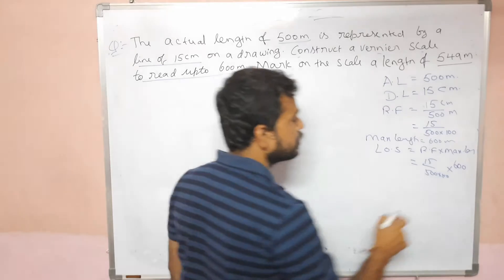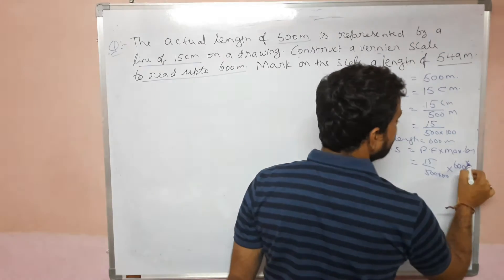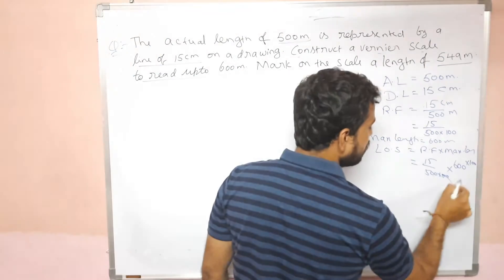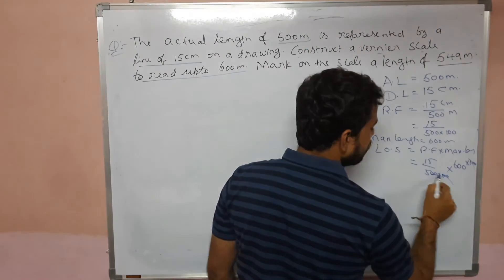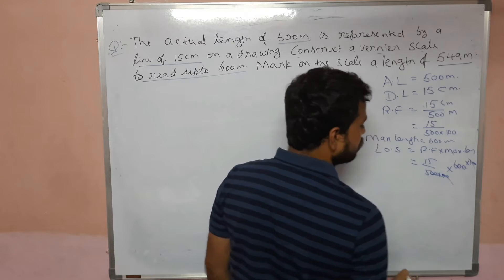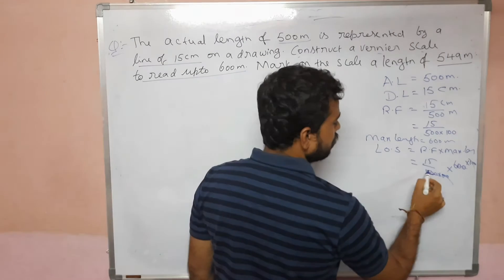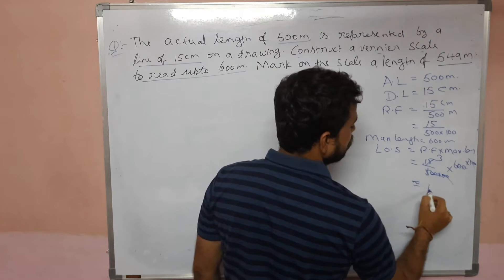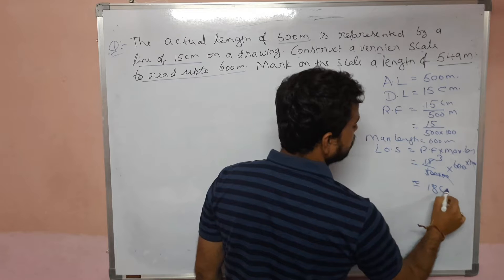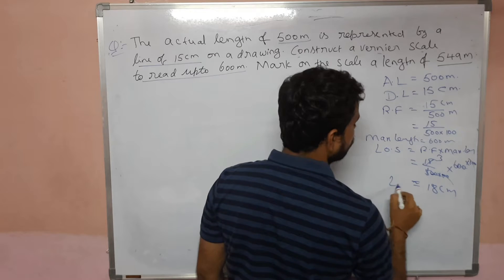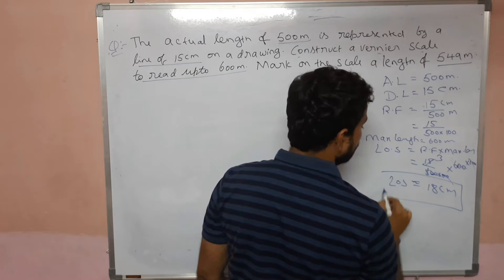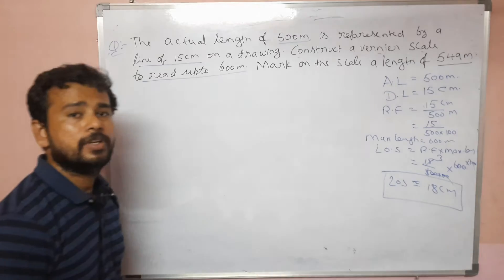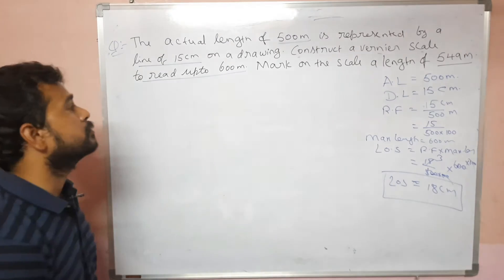600 meters — what is it? That is centimeter multiplied by 100. So: 15 by 500 into 100 centimeters multiplied by 600 into 100 centimeters. The 100s cancel, giving a total of 18 centimeters length of scale.